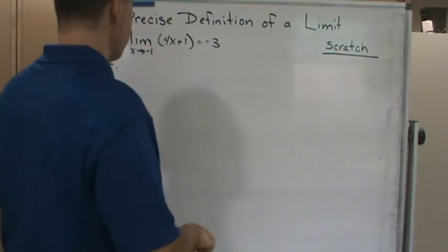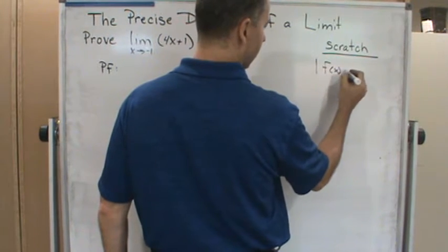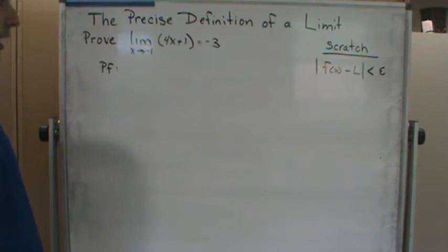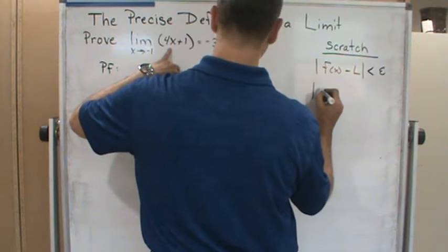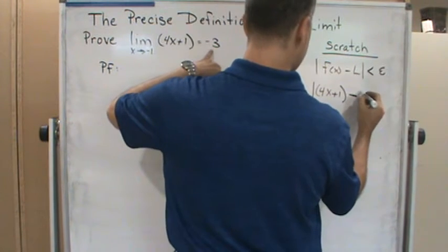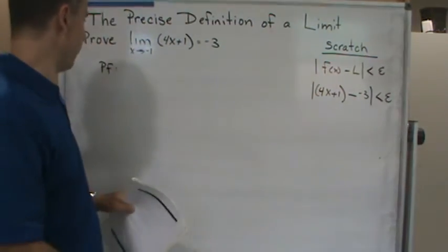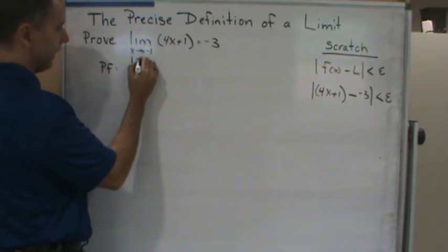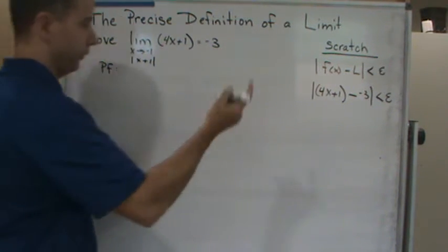So I'm going to start off with absolute value of f of x minus l is less than epsilon. I'm always going to start there. So now what is f of x? f of x is 4x plus 1 minus l, which is negative 3, is less than epsilon. I'm going to simplify this and what am I looking for? I'm looking for absolute value of x minus negative 1 or x plus 1. That's what I'm looking for.